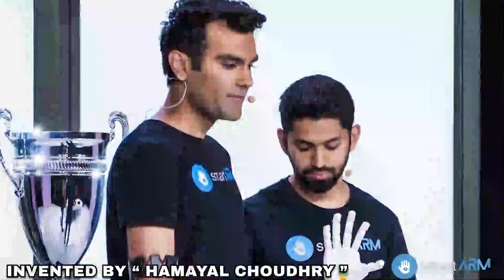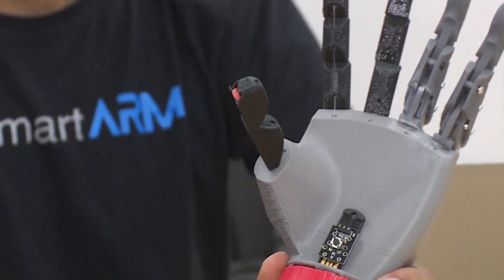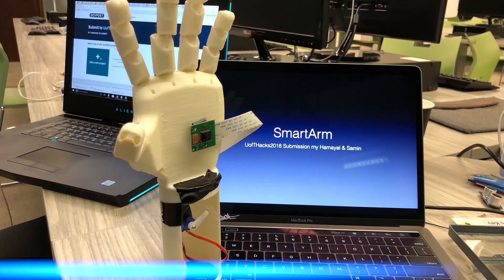Smartarm, invented by Hamael Chowdhury, is the first prosthetic arm to use a built-in camera and machine learning algorithms to think and see on its own.